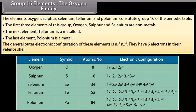The general outer electronic configuration of these elements is ns2 np4. They have six electrons in their valence shell.